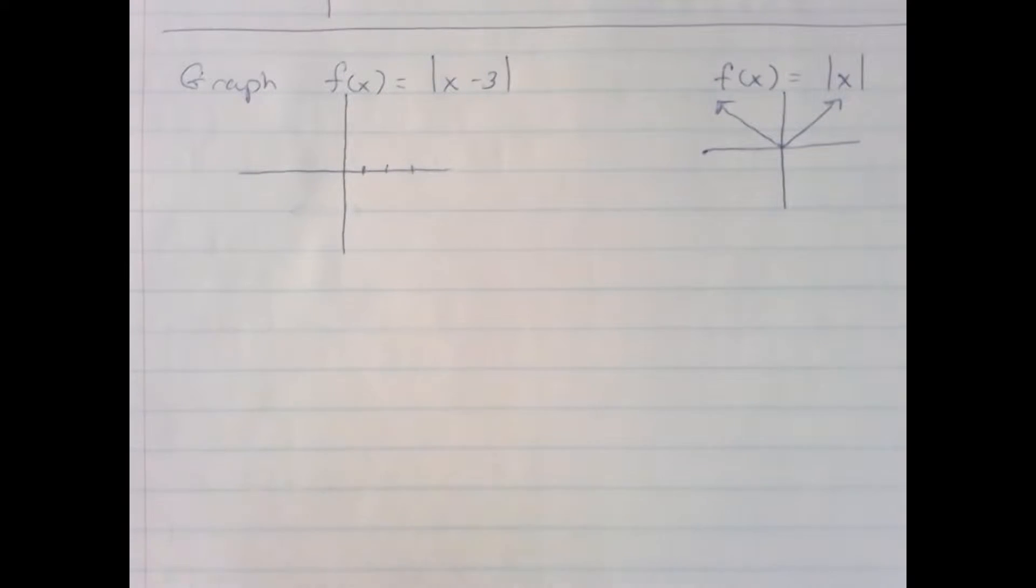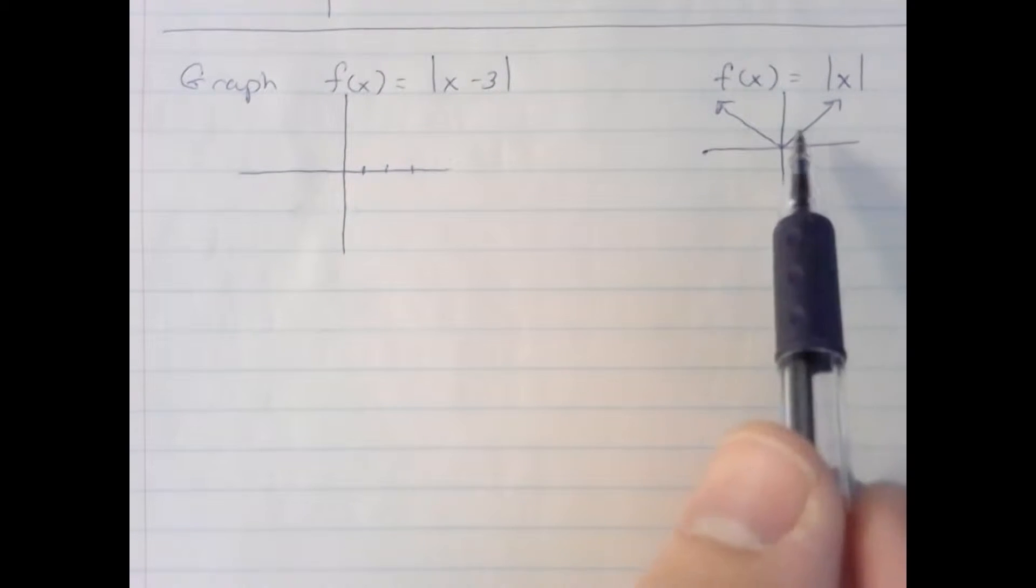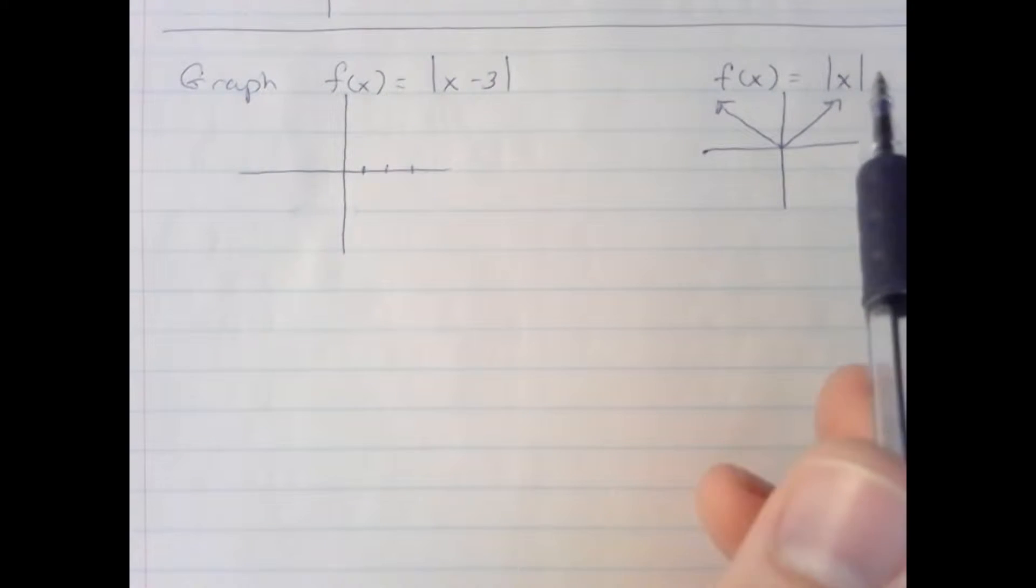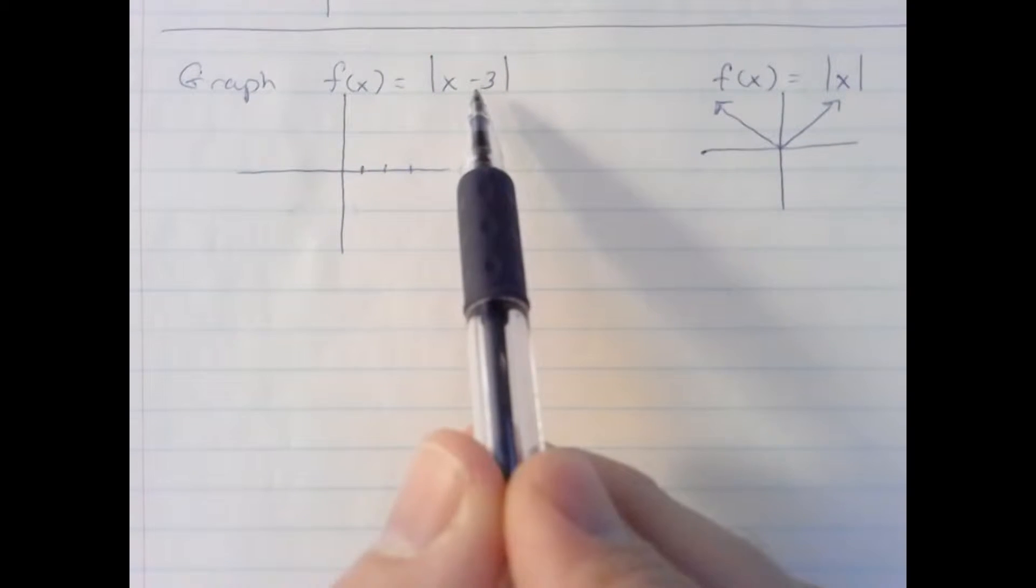All right, here we're going to look at the graph of the absolute value of x minus 3 by comparing it to the original function f(x) equals absolute value of x. So this is just a transformation of the original graph.